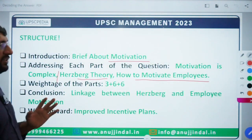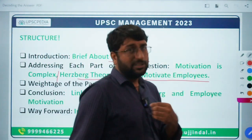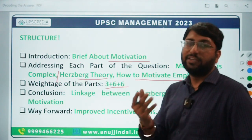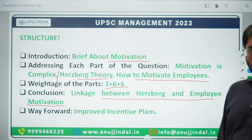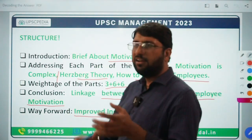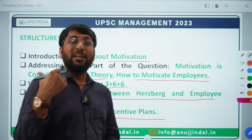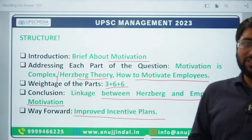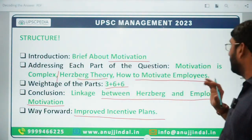Next is the weightage of the parts. Let's say it's a 15-mark question. I will divide it: three marks for motivation and how it is a daunting task. Next, six marks I am going to dedicate for Herzberg's theory, and next six marks for how I can motivate the employees. For the conclusion, we are going to focus upon a linkage between Herzberg's theory and employee motivation. For the way forward: we are going to improve the incentive plans. If I know that Herzberg's theory can be used to motivate people, certainly I am going to improve or improvise my incentive plans and policies for my employees so I can motivate them and get better work from them. So I quickly structured this in 30 seconds before even starting my answer.